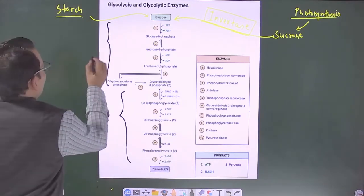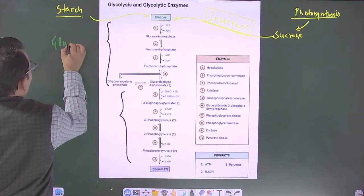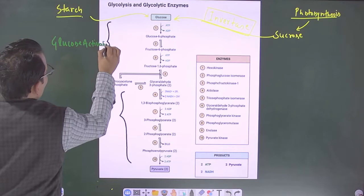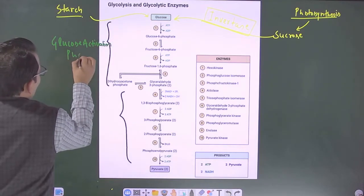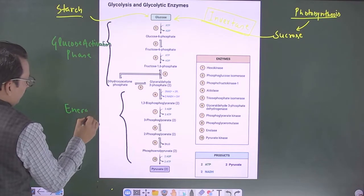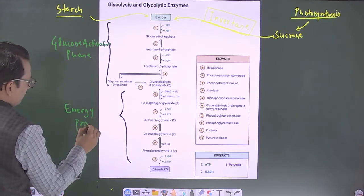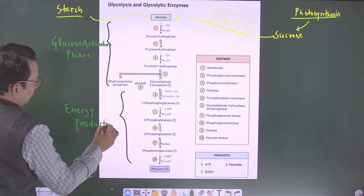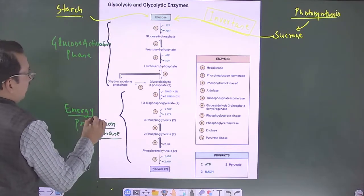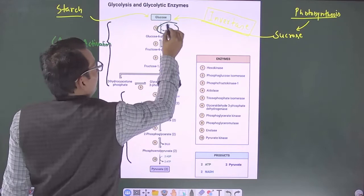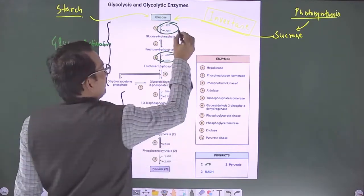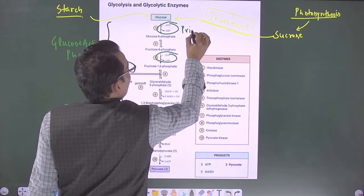We may see this, you may find it as glucose activation phase and here you see energy production phase. These glucose activation and energy production phases are here because you spent energy here and here. First and third step where you can say that these are called as priming reactions.